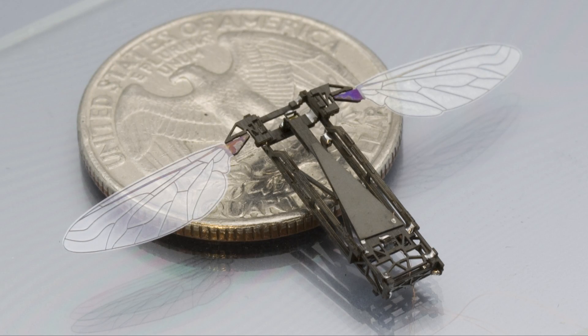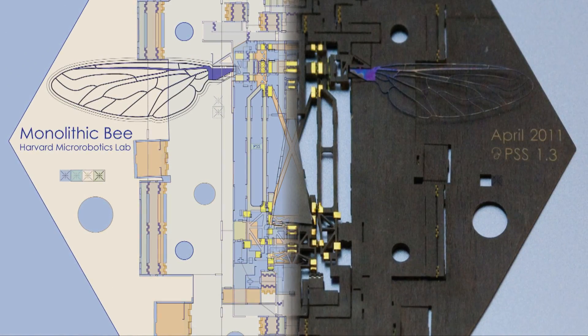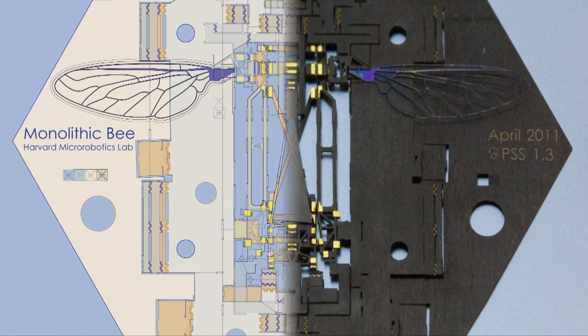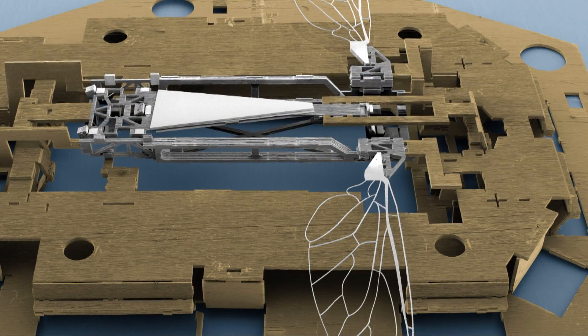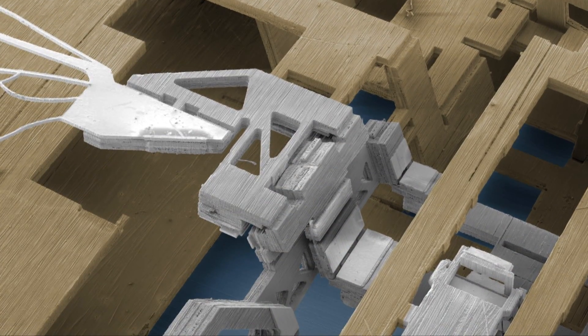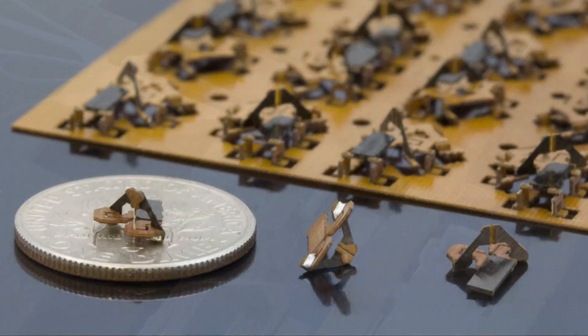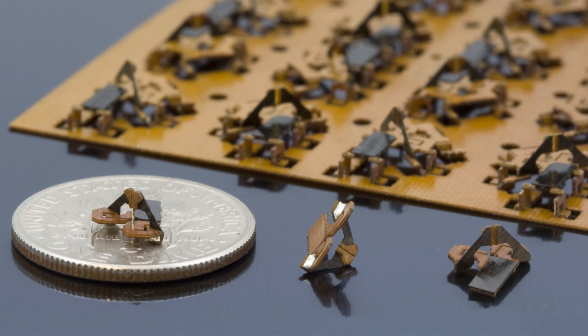Printed circuit MEMS is a versatile process for creating machines at the millimeter scale. It can create complex electrical and mechanical systems using a variety of techniques. It is a process well-suited to mass production, enabling parallel manufacture of large numbers of robotic devices.